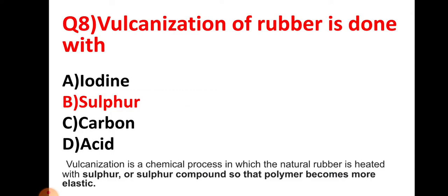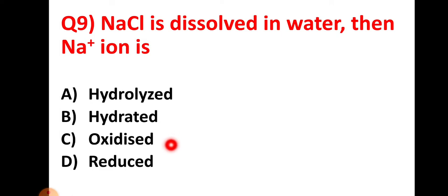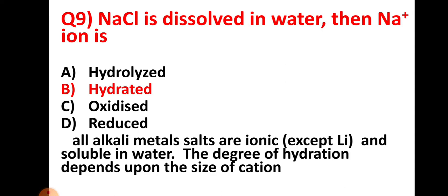Question number nine: when NaCl is dissolved in water, the Na+ ion is — option A: hydrolyzed, option B: hydrated, option C: oxidized, option D: reduced. The correct answer is hydrated (option B). All alkali metal salts are ionic (except lithium) and are soluble in water; the degree of hydration depends on the size of the cation.